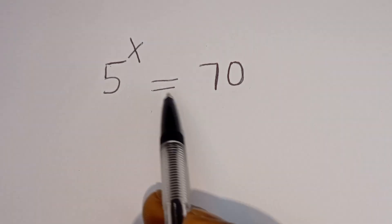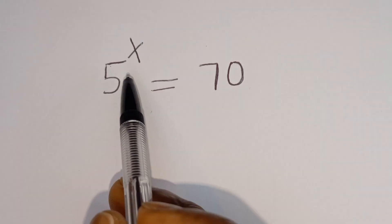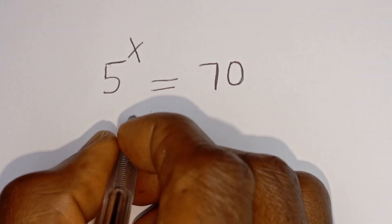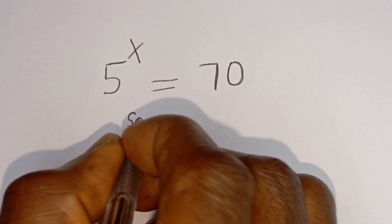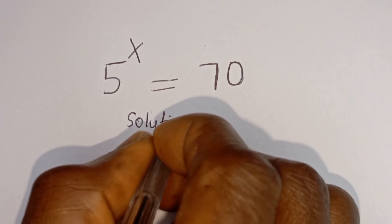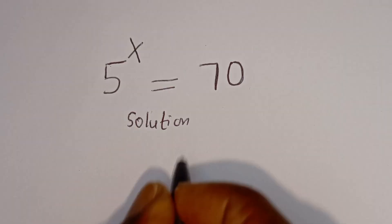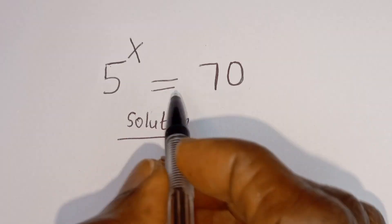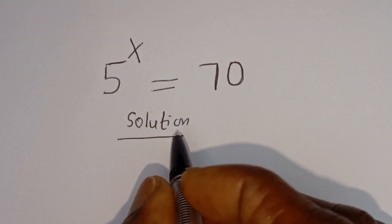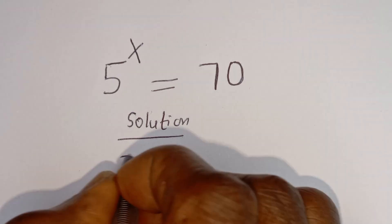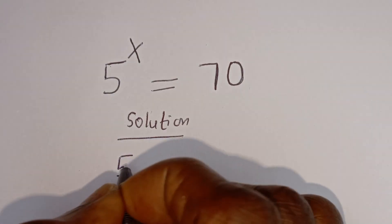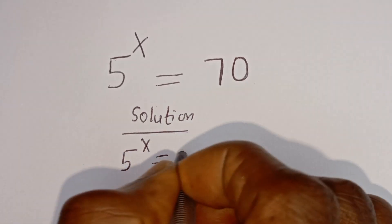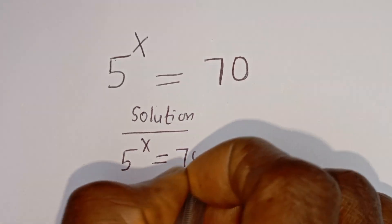Hello. How to solve for X in this equation: 5 to the power of X is equal to 70. Solution. We are going to solve this problem in two different ways. We have 5 to the power of X is equal to 70.